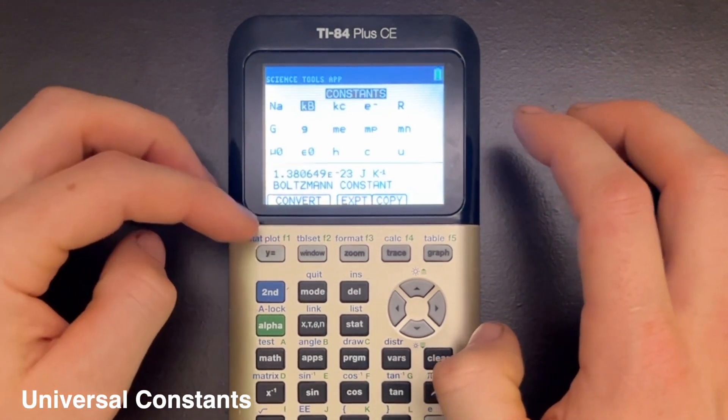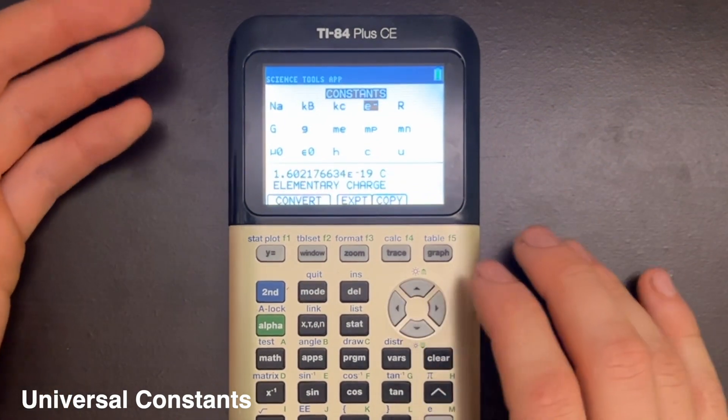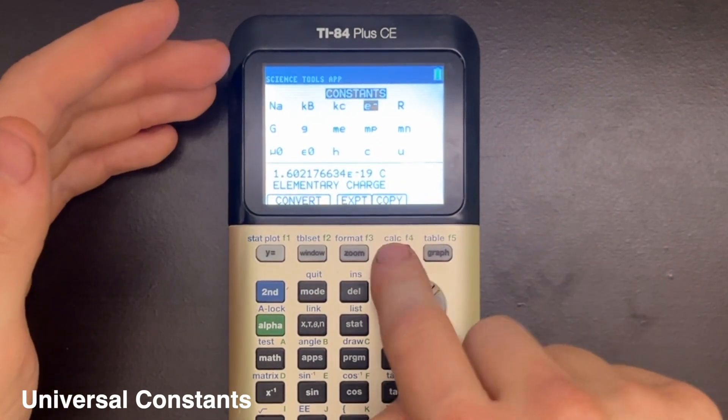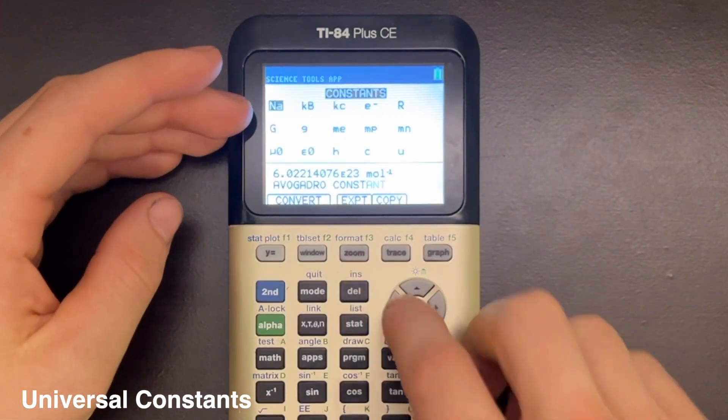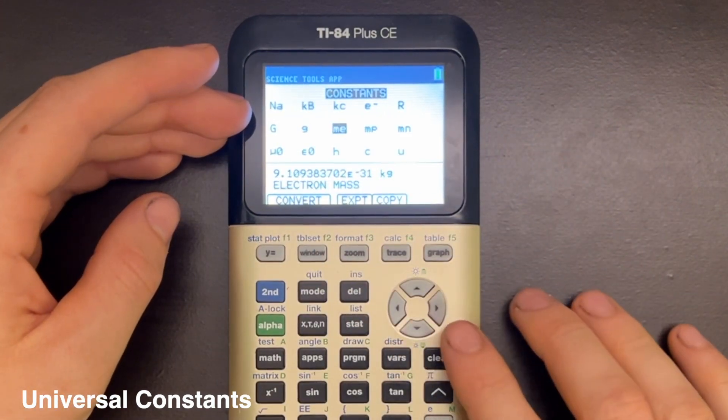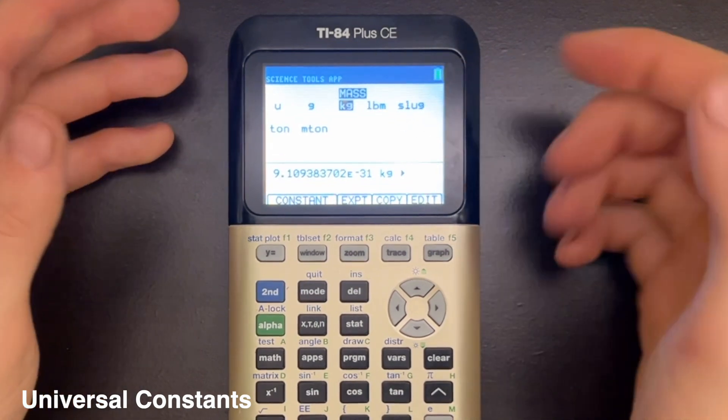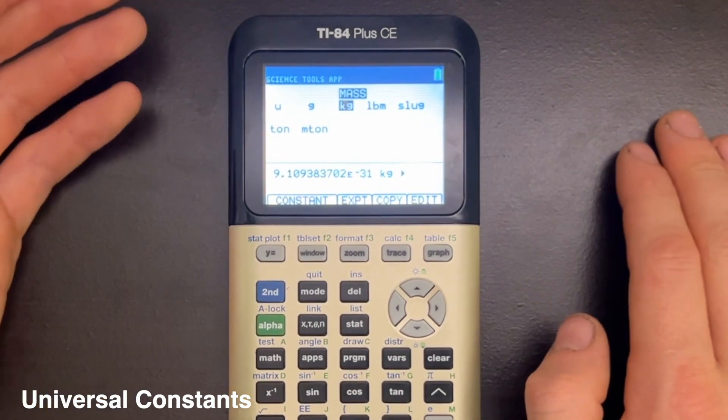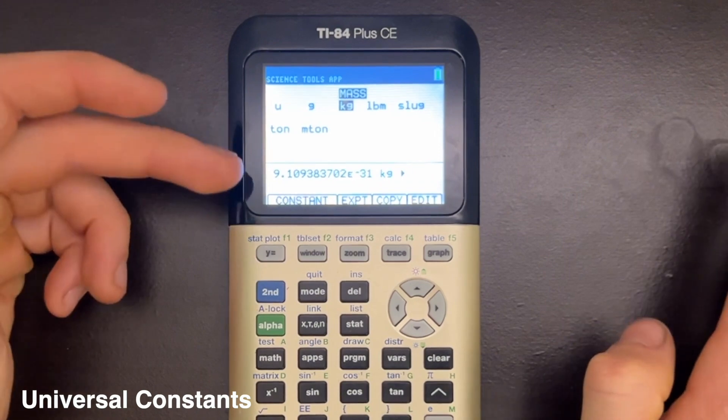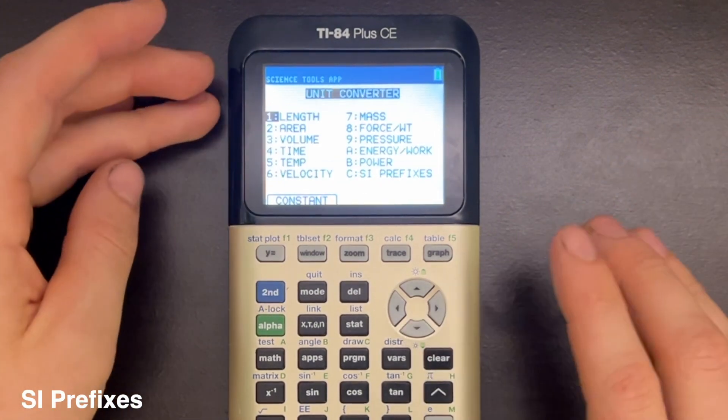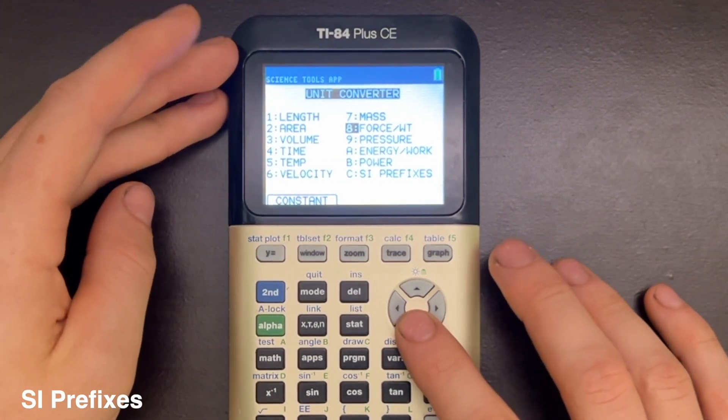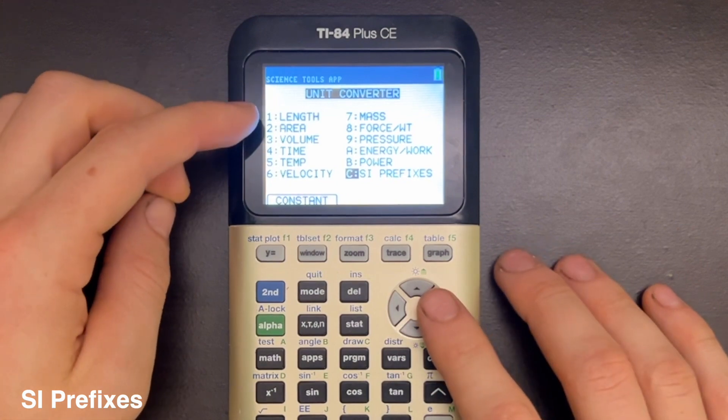But just know that if you're in this Constants menu and you want to convert one of them, so you go to the Copy key and it brings you this instead of just bringing you to the specific unit conversion window, know that converting that constant is not actually an option that's built in, so you'll have to be careful there.